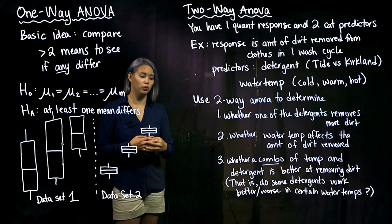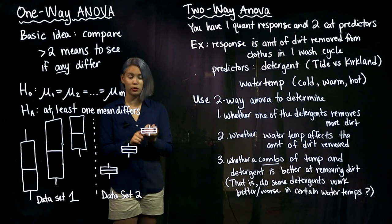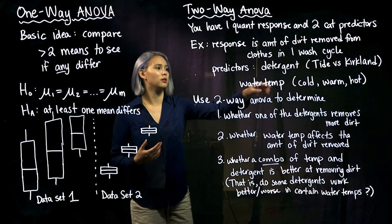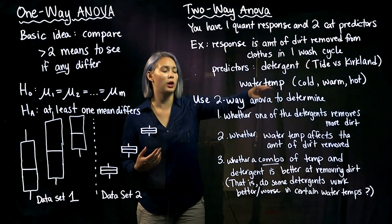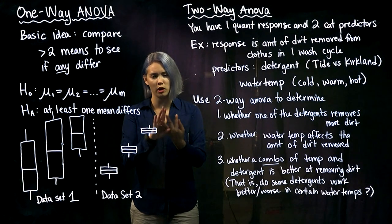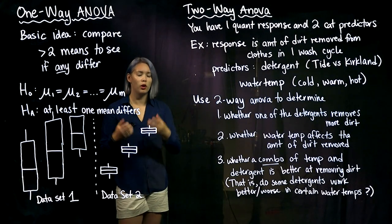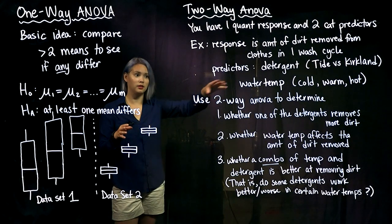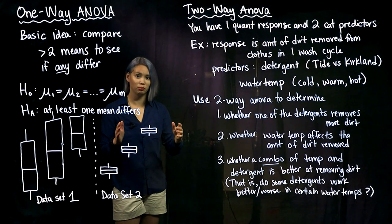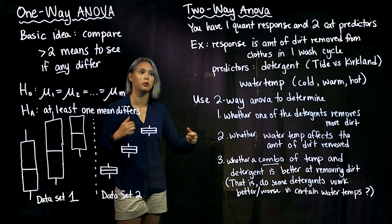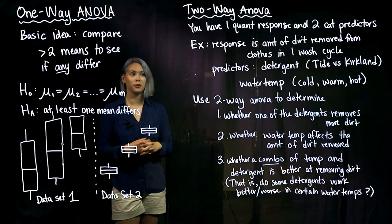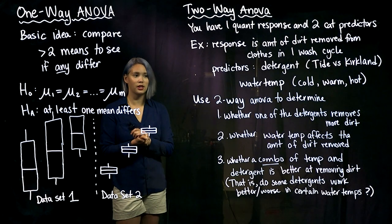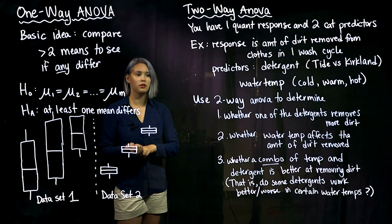Imagine that we're doing an experiment to look at the temperature of water used when you're washing your clothes and the type of detergent you're using. So imagine you're using two detergents — Tide versus Kirkland — and then your water temperature is cold, warm, or hot. You want to see, if you make the clothes equally dirty in each experiment, is one of these combinations going to remove more dirt from your clothing? So we're trying to measure as our response the amount of dirt removed from the clothing in one wash cycle. Our predictors are the type of detergent used and the water temperature.